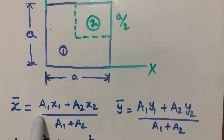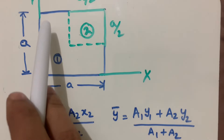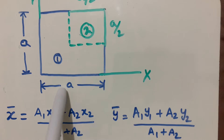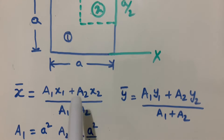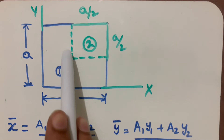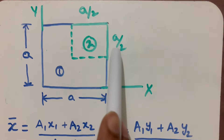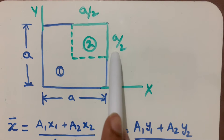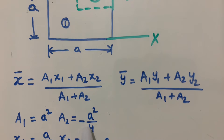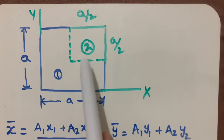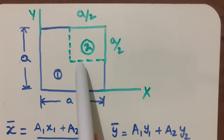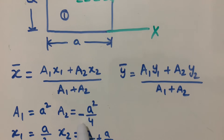A1 is the area of the big square, which is a × a = a². A2 is the area of the small square: (a/2) × (a/2) = a²/4. However, since we are removing the second square plate from the first plate, we write A2 as minus a²/4.